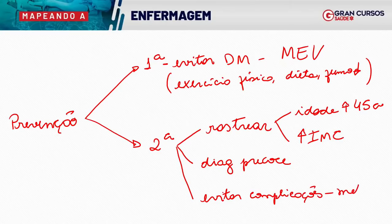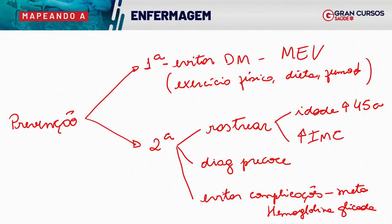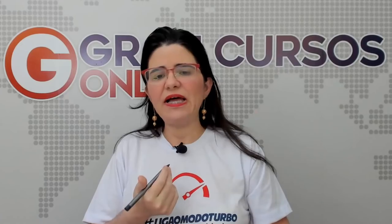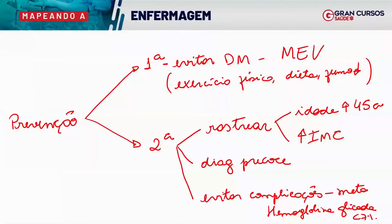E evitar complicações, porque quando a pessoa está com diabetes preciso manter as metas — manter a hemoglobina glicada sob controle, que é menor que 7% para a população adulta. No caso de idosos e crianças, há maior tolerabilidade porque há maior risco de hipoglicemia. As complicações incluem retinopatia, doença renal crônica, AVC, infarto, doença arterial periférica, levando ao pé diabético.